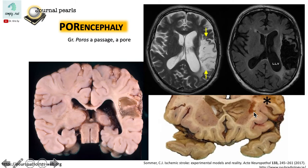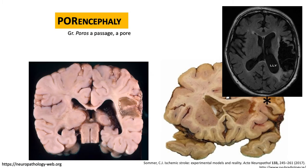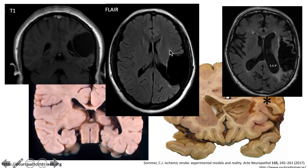Let's recall what it looks like. What lines this cystic space which replaces the brain parenchyma — is it gray or white matter? We see here that it's white matter. This is also the case in porencephaly: the cystic cavity is also lined by white matter, as you can see here.